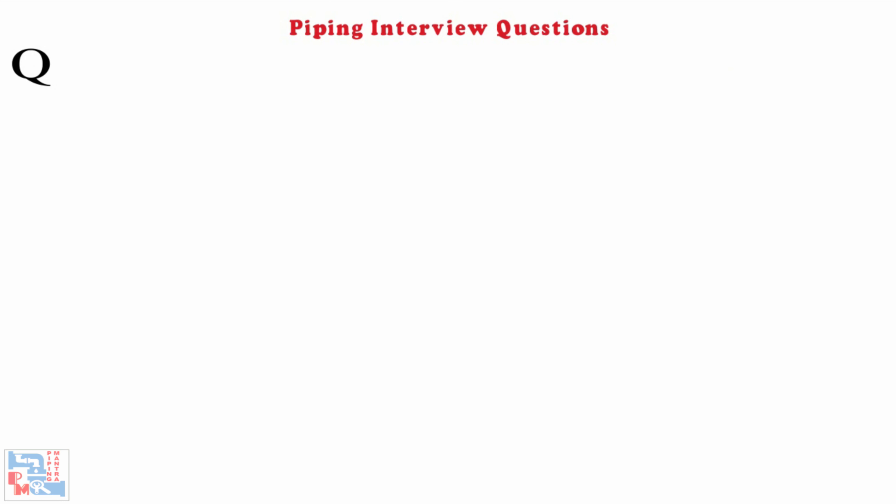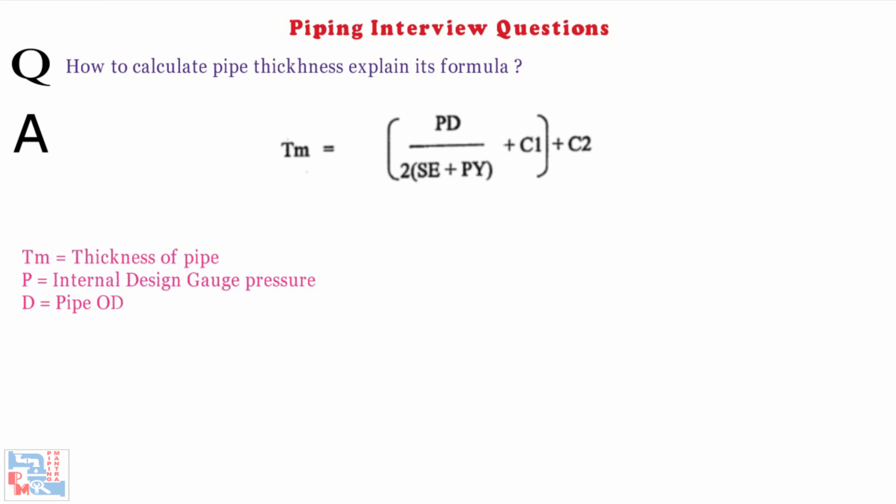Next, how to calculate pipe thickness? Explain its formula. Tm equals PD divided by 2SE plus PY plus C1 plus C2, where Tm is the thickness of pipe, P is the internal design gauge pressure, D is the pipe OD, S is the allowable stress, E is the joint quality factor, Y is the coefficient.